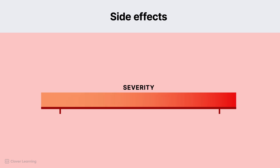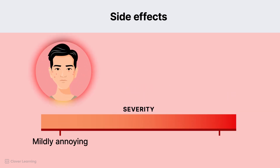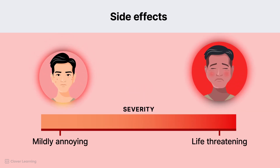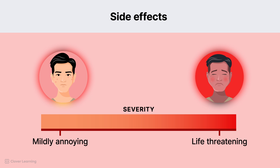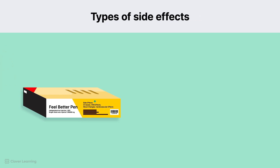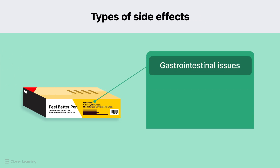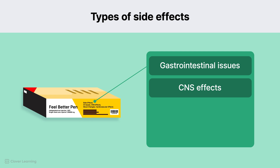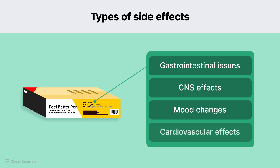Side effects are unintended reactions that can range in severity from mildly annoying to life-threatening. Many side effects are predictable based on the action of a drug and its interaction with different body systems. There are many common types of side effects, including gastrointestinal issues, central nervous system effects like dizziness, mood changes, and cardiovascular effects.